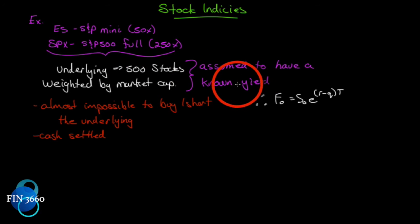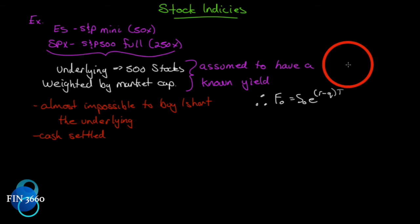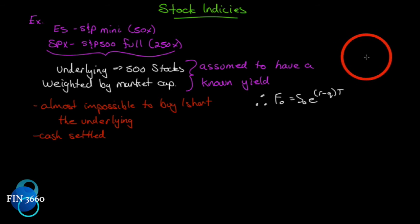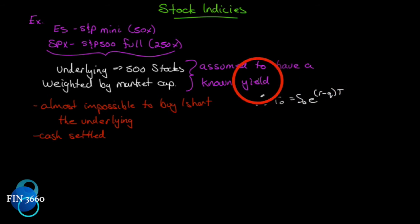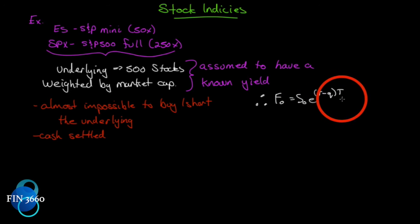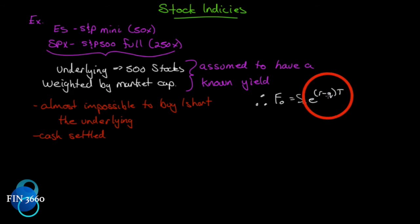The underlying 500 stocks are weighted by market cap and it is assumed to have a known yield. Typically you'd have to figure out of those 500 stocks how many are paying dividends, what the dividend amounts are over the period, and what the yield is — that's a lot of work. So it's usually just estimated at a constant yield. Because it has a known yield, there's a formula for the futures price based on the spot price, the risk-free rate, the known yield, and the time the futures contract lasts.